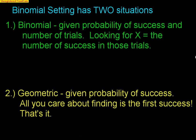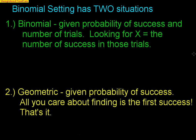Now we've first talked about the binomial setting. Hopefully everybody's set to go in the binomial setting. But the binomial setting actually has two situations. The first situation is the binomial situation — the one we've been talking about in all the other videos. The binomial situation is given a probability of success and a number of trials, you're looking for the number of successes in those trials. We could summarize this very easily.